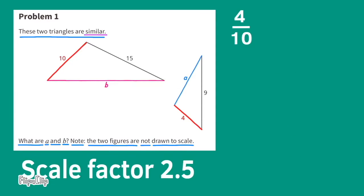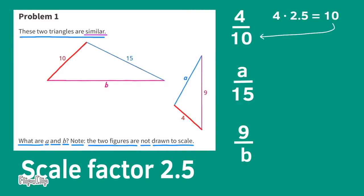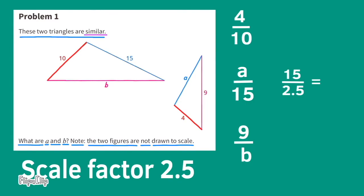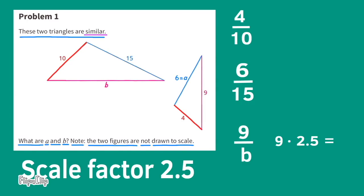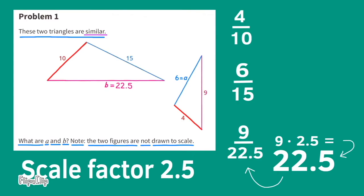Now that the scale factor is two and a half, we can find the missing side lengths. Four corresponds to ten, A corresponds to fifteen, and nine corresponds to B. Fifteen divided by two and a half equals six, so the missing length for A is six units. Nine times two and a half equals twenty-two and a half, so the missing side length for B is twenty-two and a half.